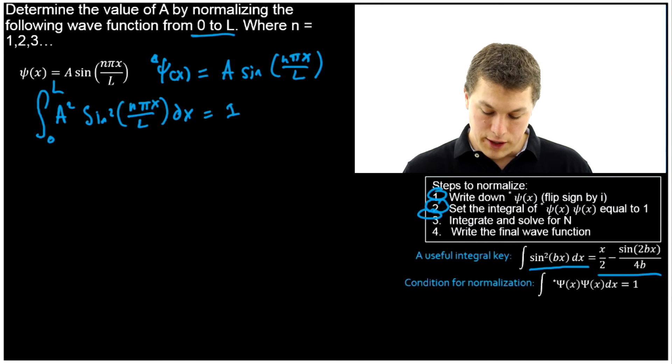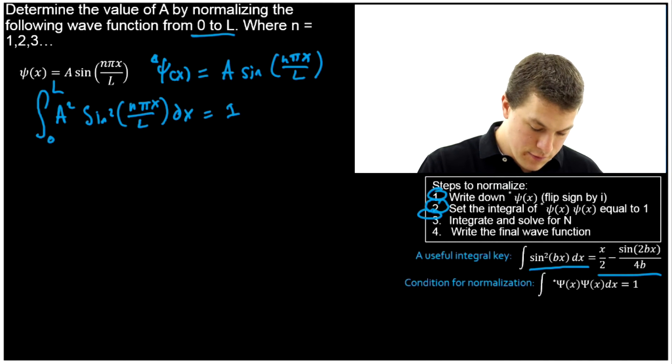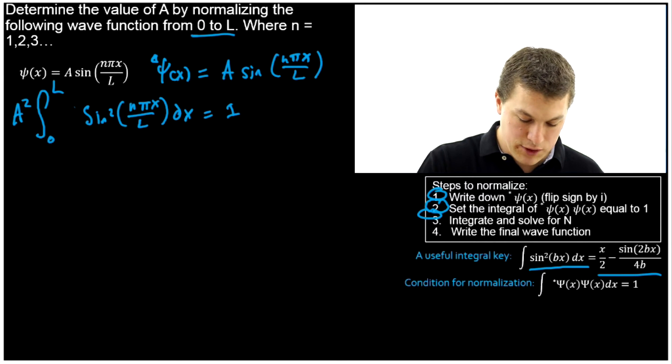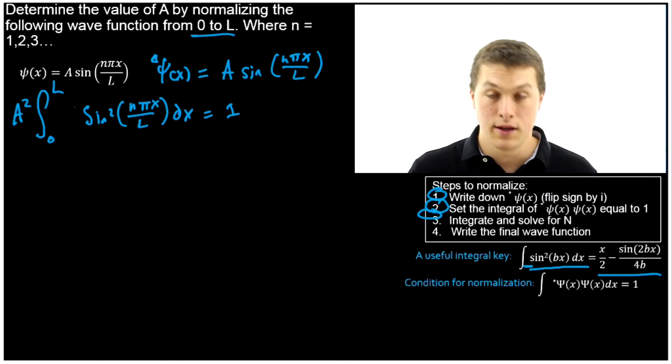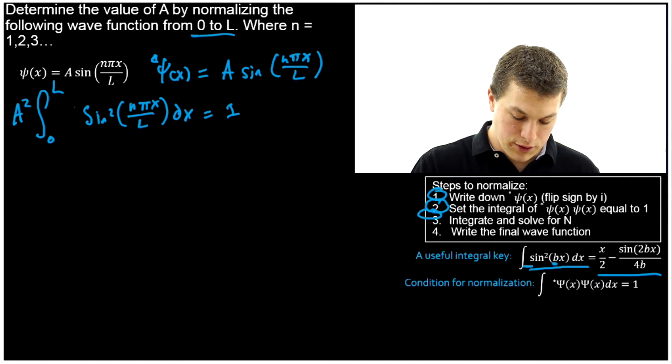So we're going to use that integral key for sine squared, and then bx is in the argument of our sine. Notice we can, as always, pull out our A. So our A will take that out front, get rid of the A inside. And that's nice, because you notice we don't see any constant in our integral key, as usual. So now what we need to do is identify what that constant is to be able to use our integral key.